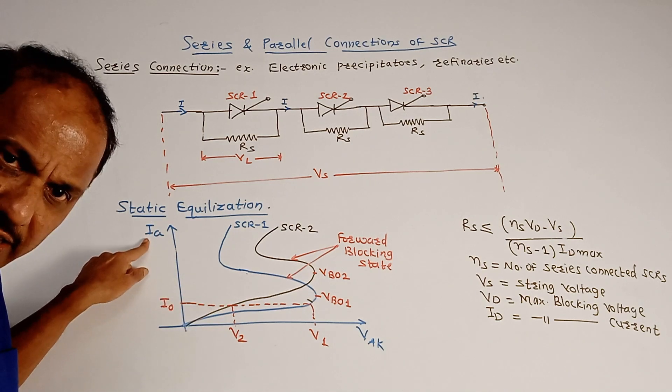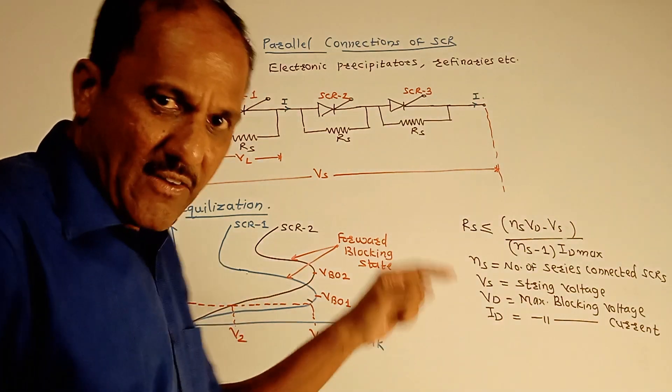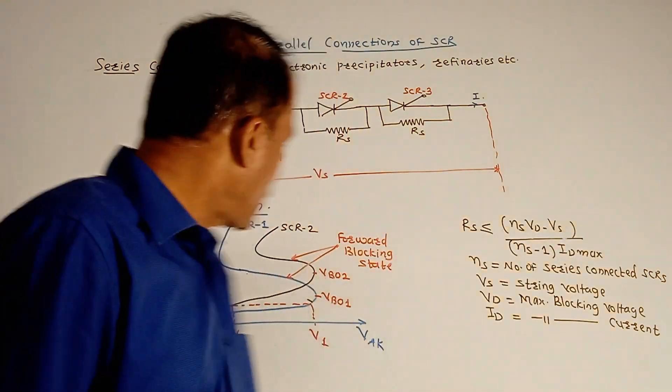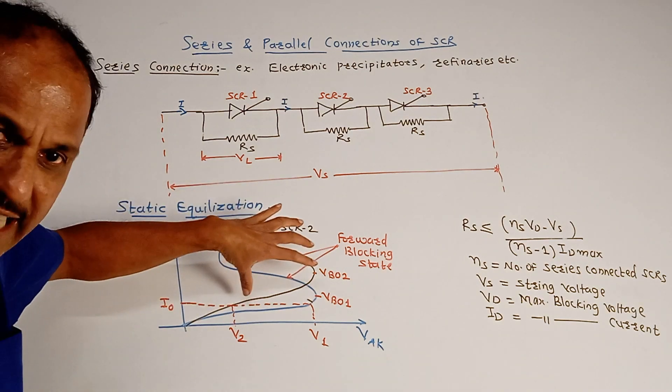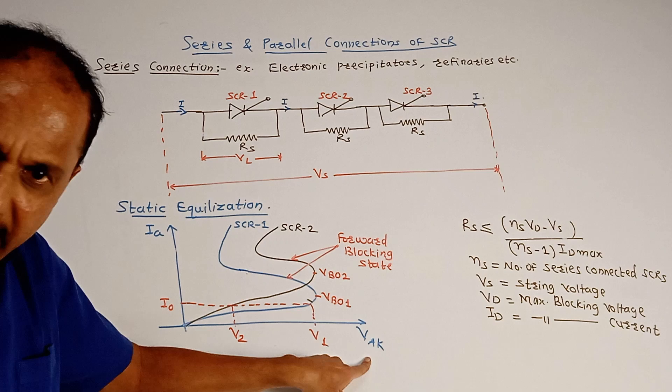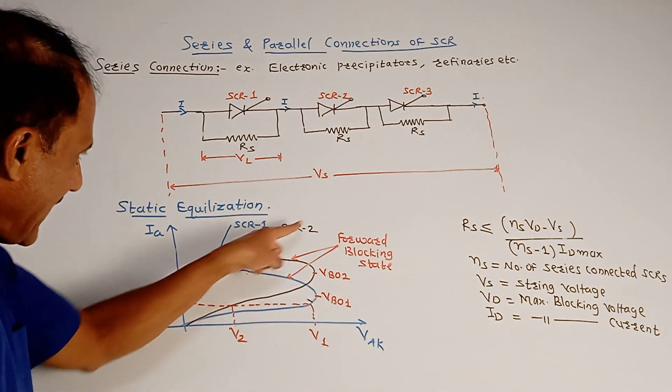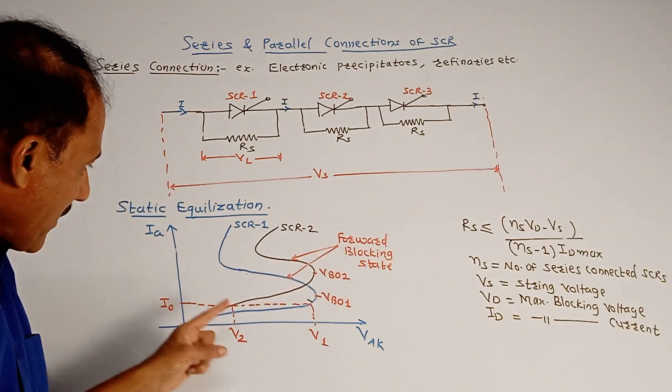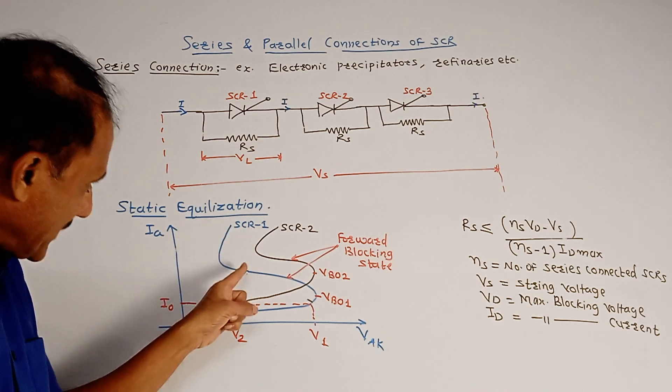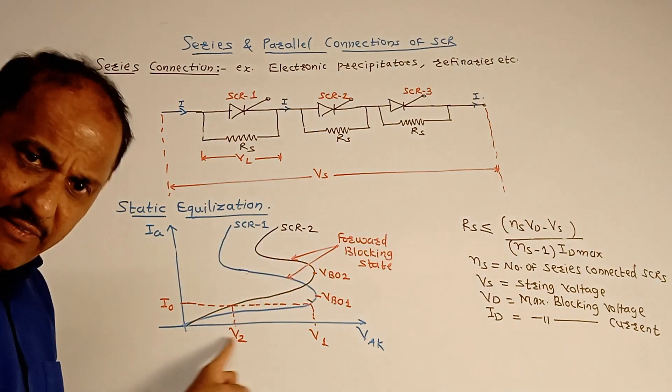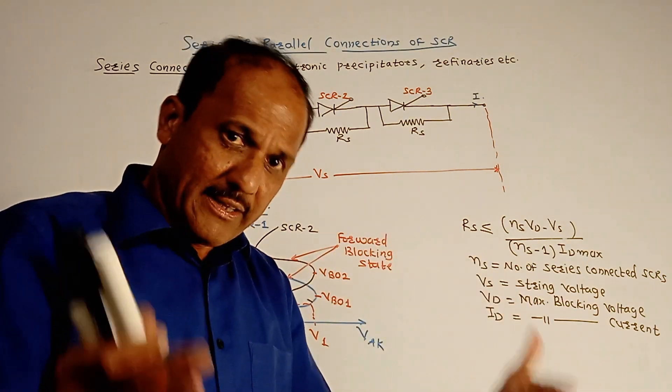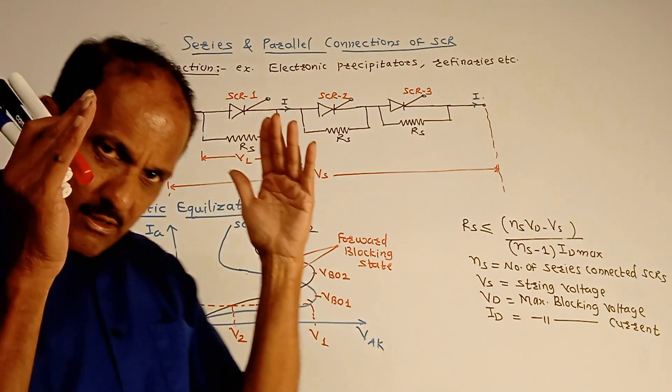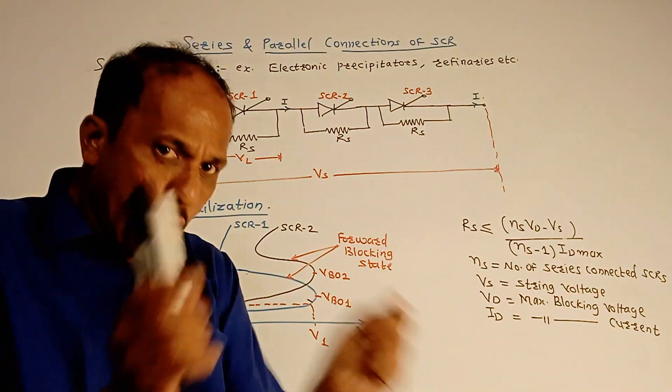Consider a graph, this is the graph of anode current IA versus VAK. VAK is voltage between anode and cathode. So there are inherent or internal variations of anode current versus VAK which is shown in this diagram. I have considered two SCRs, SCR1 and SCR2. Now consider certain leakage current I0. But for the same level of I0, both SCR voltages, that is for SCR1 and SCR2, voltages are V1 and V2. These voltages are different, these voltages are not same. That means whenever the SCRs are in off state, due to certain inherent variations, the voltage rating related to each SCR will be different.